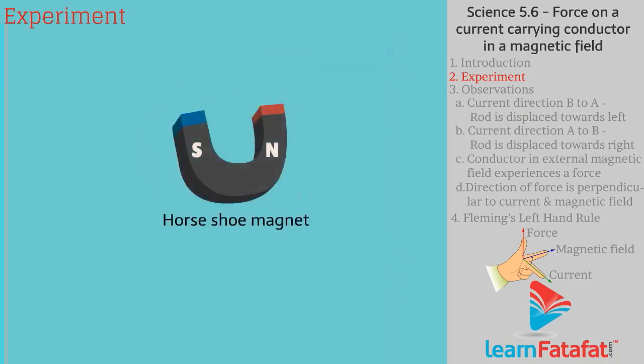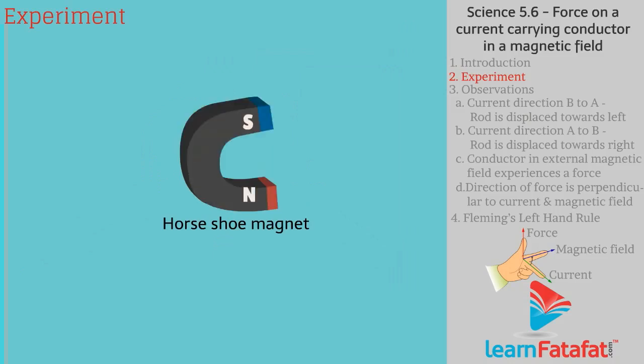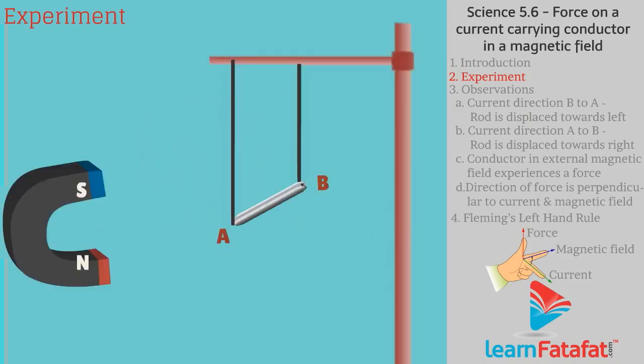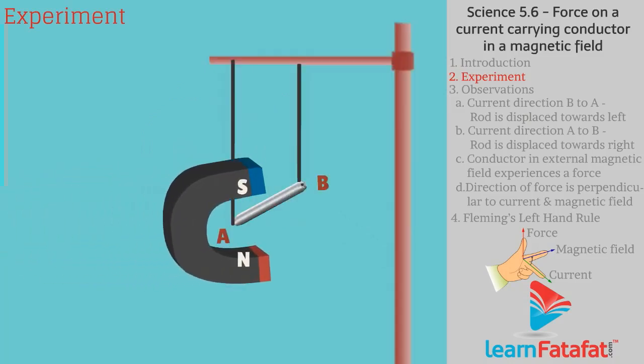Take a horseshoe magnet and align it vertically such that its magnetic field is directed in upward direction. Place this magnet near conductor rod such that the rod is located between the two poles as shown in figure.